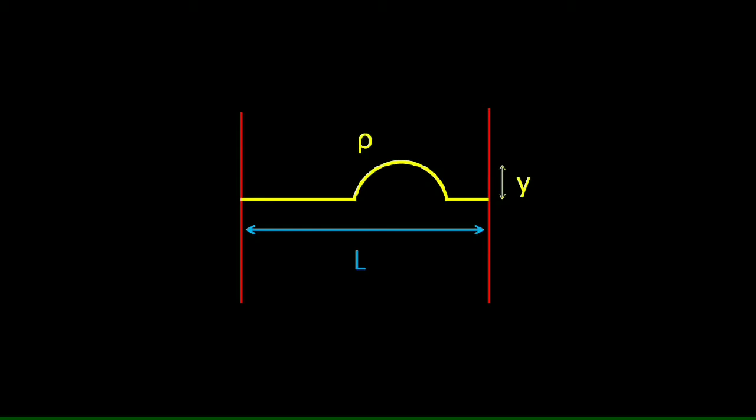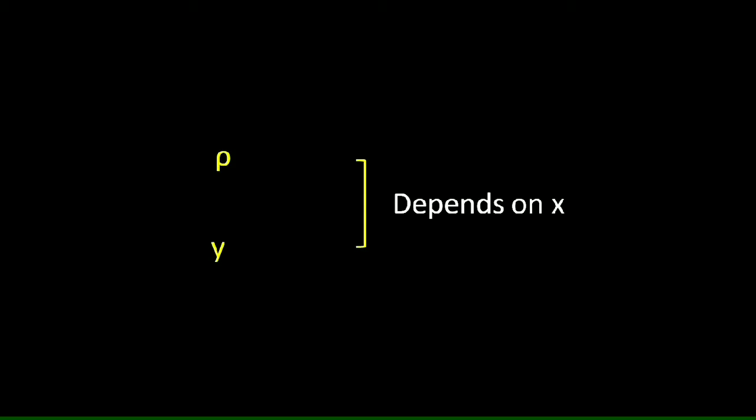Denote the vertical displacement of the disturbance as Y. It's evident that the density and the value of Y depend on the position on the string, that is x. In addition to that, Y also depends on time, as the wave propagates forward, it changes position and the displacement changes. So we have the following functions.